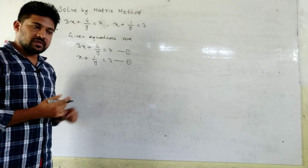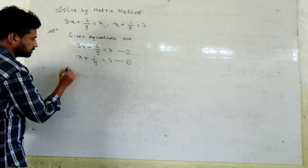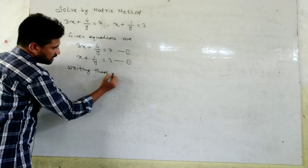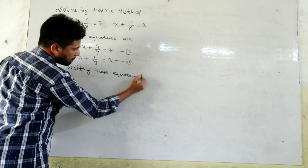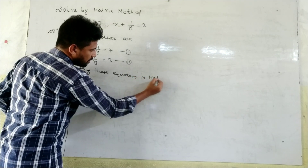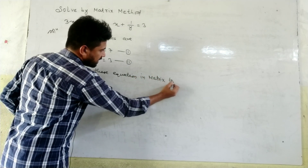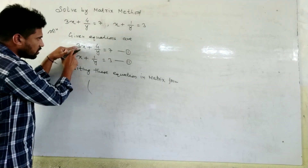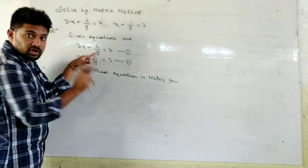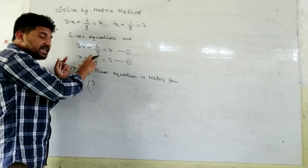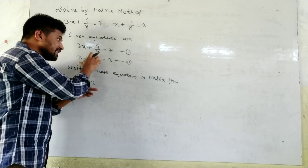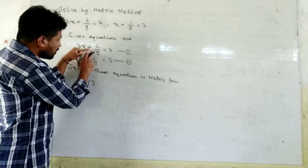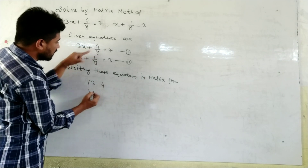First of all, we have to write these two equations in matrix form. We need to take the coefficient of x and the coefficient of 1 over y. Here, the coefficient of x is 3 and the coefficient of 1 over y is 4.